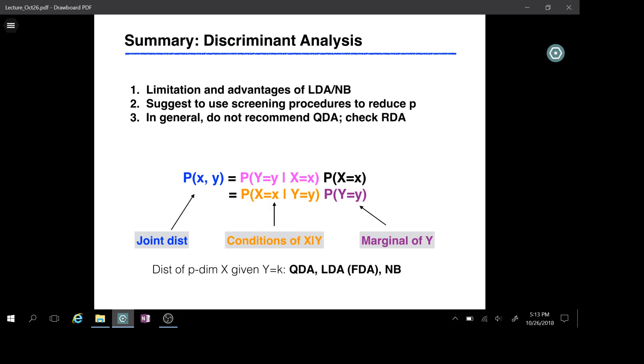One is just to use some screening procedures to reduce your potential variables. In general, I do not recommend QDA unless N is relatively large and your dimension P is small. When you do believe the covariance structure within different groups are different, you want to use QDA. And then I would suggest you to take a look at RDA and there is an R package for RDA.